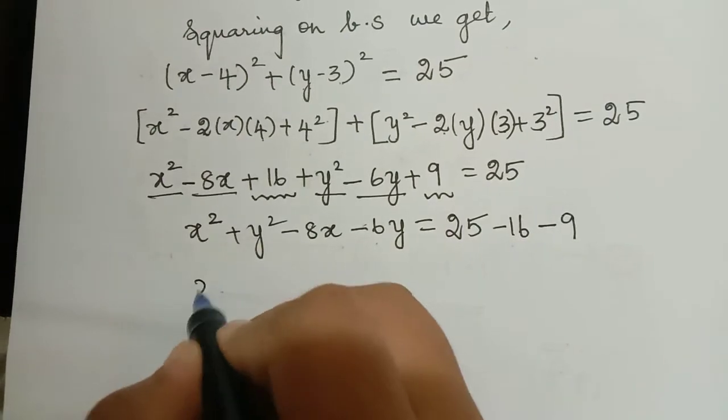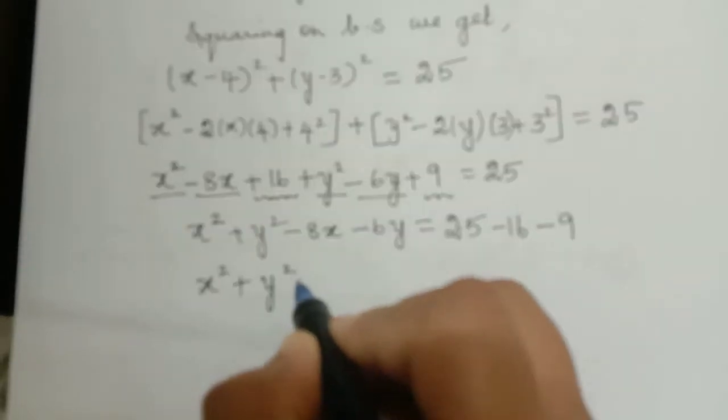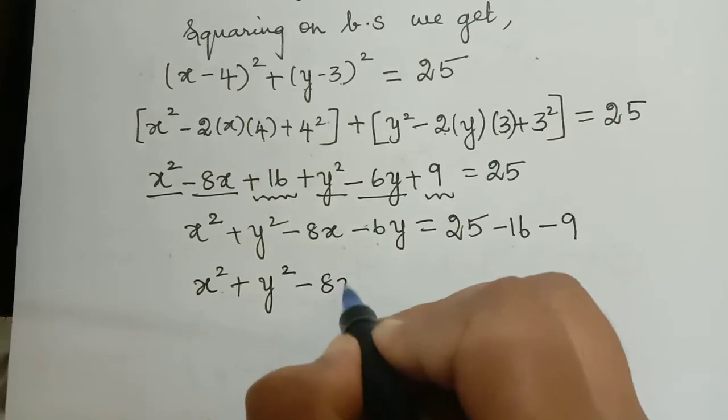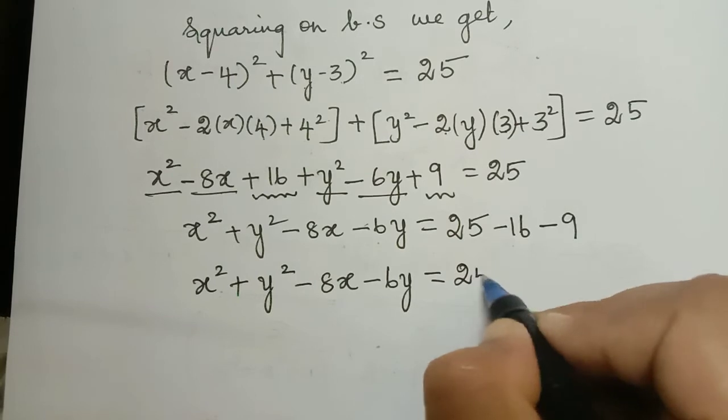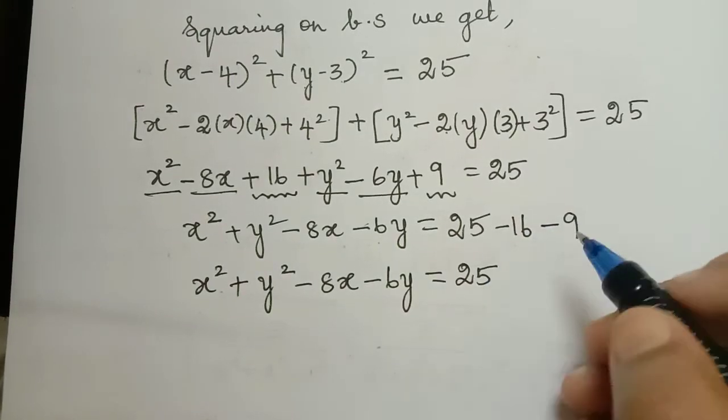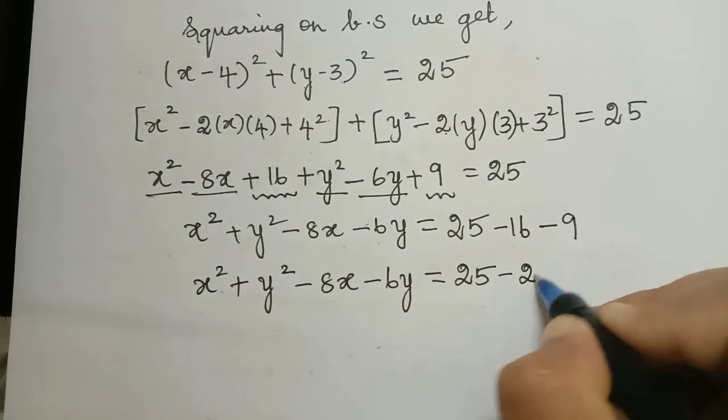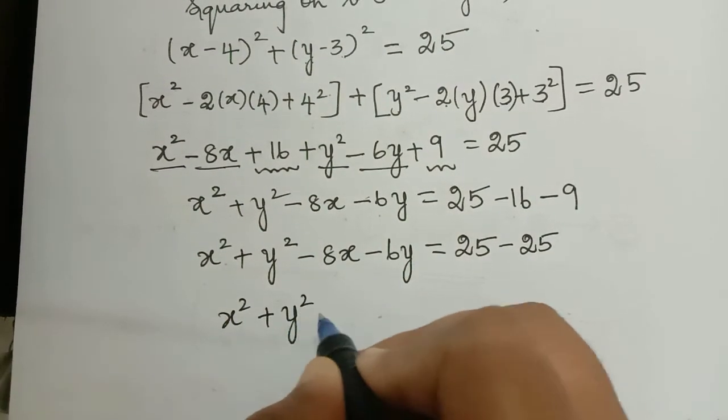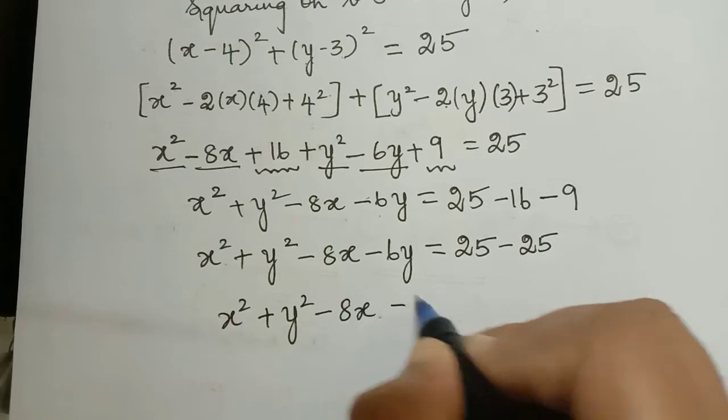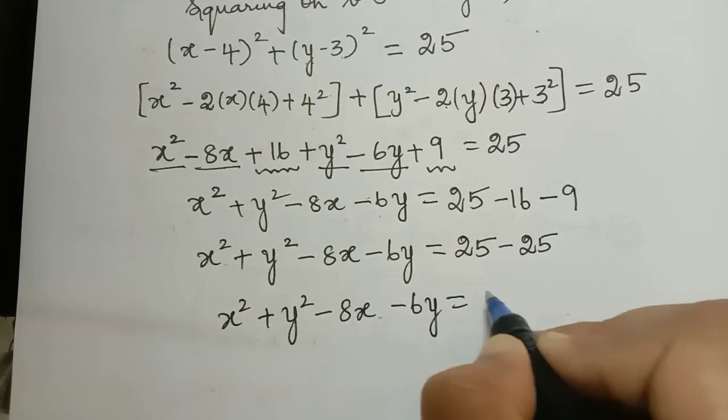So therefore this becomes x squared plus y squared minus 8x minus 6y is equal to 25 minus 16 minus 9 is minus 25. And therefore, it becomes x squared plus y squared minus 8x minus 6y is equal to 0.